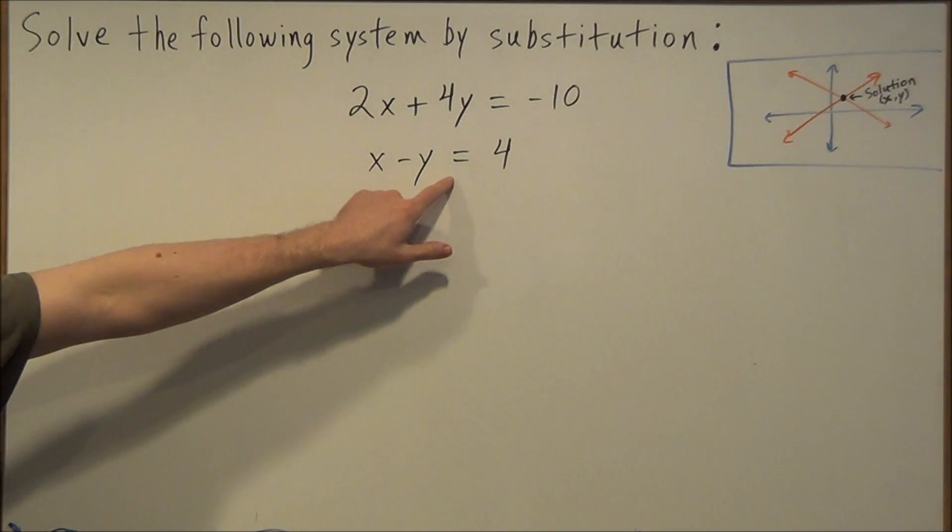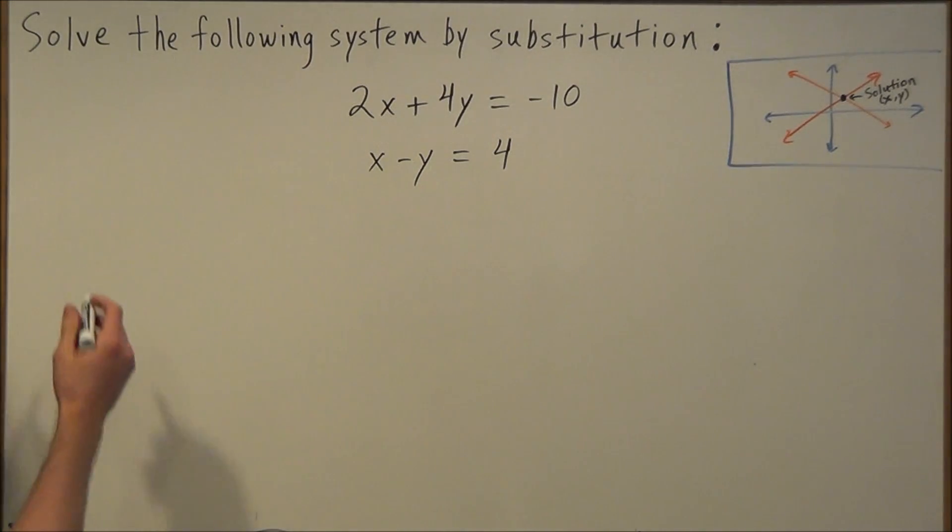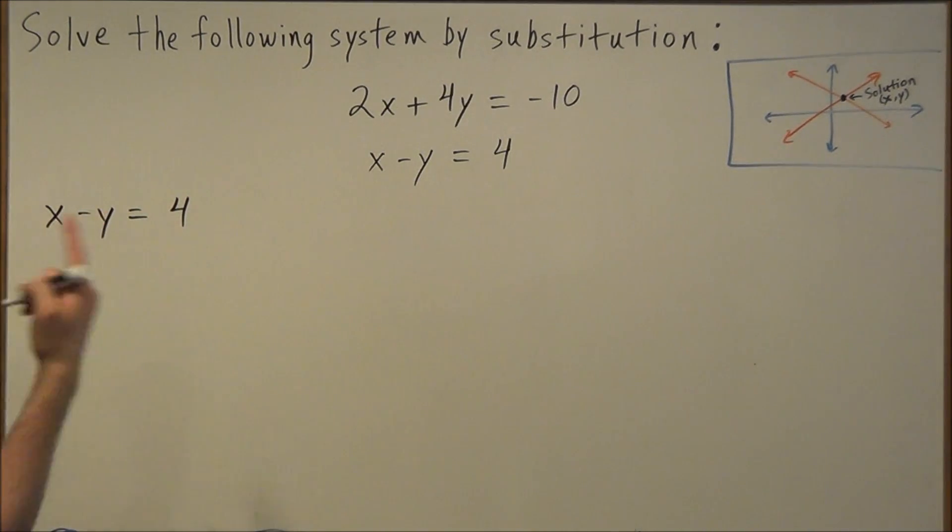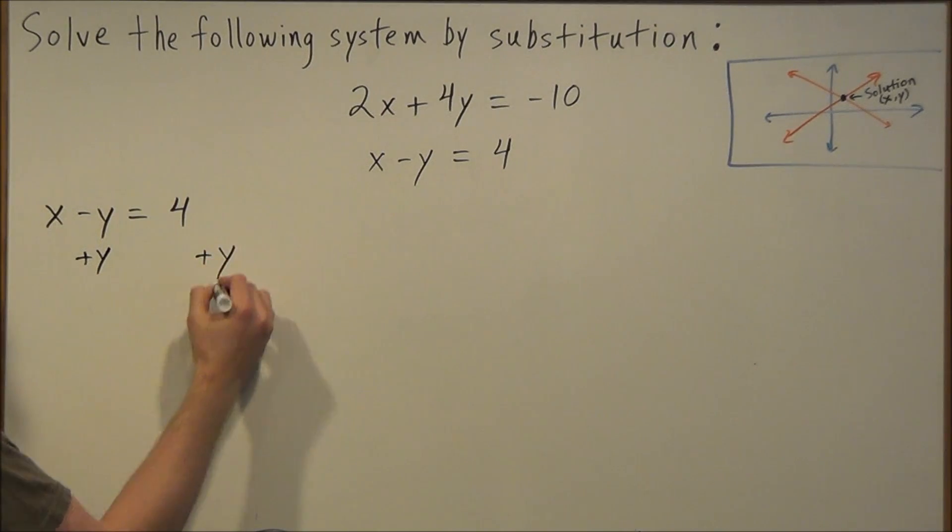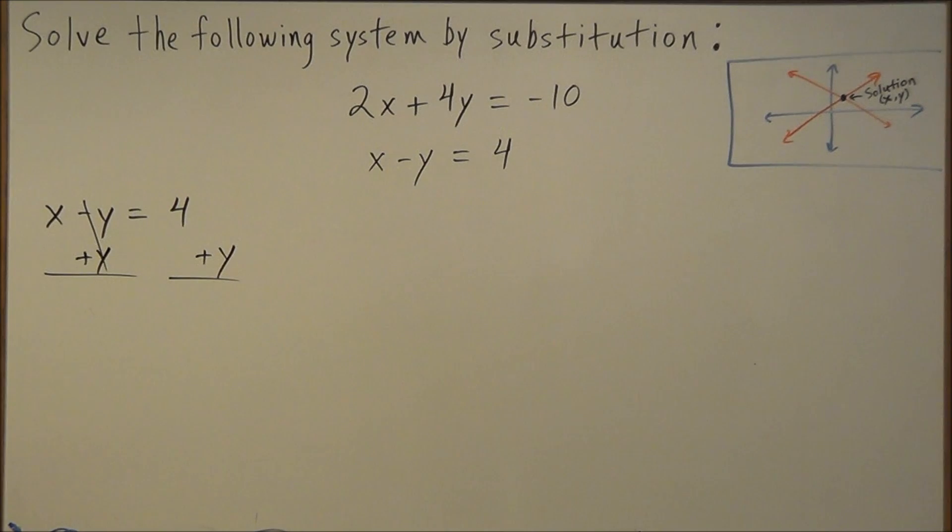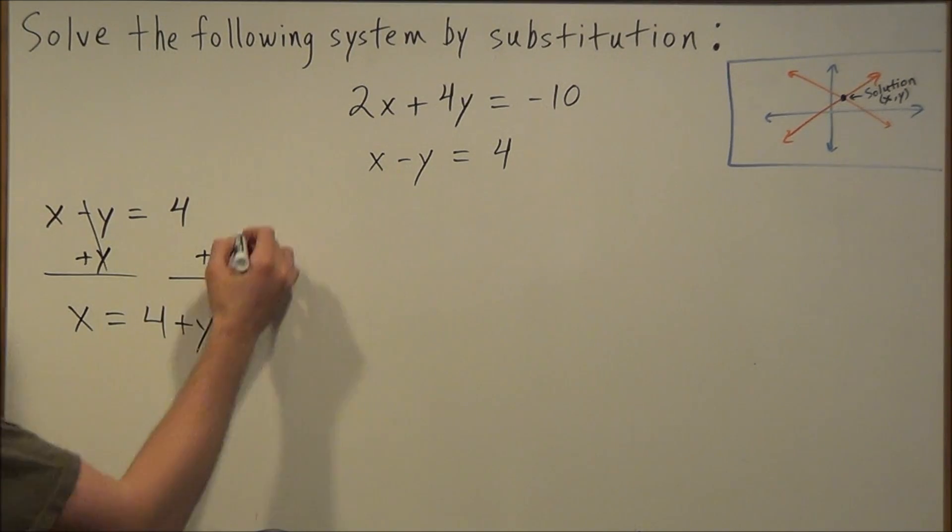So if we look at both of these, the second equation is easier to solve for. So we start off, we have x minus y equals 4. We could solve for x in one step by adding y to both sides of this equation. Technically, if we wanted to, we could solve for y, but that would take two steps. So we solve in as few steps as possible. So we have x equals 4 plus y.